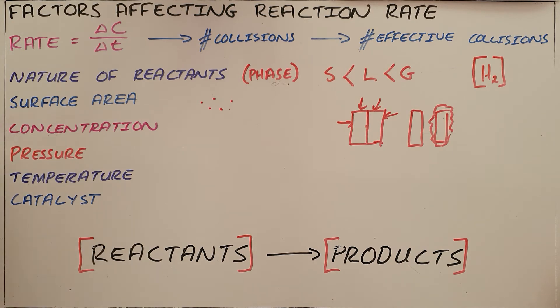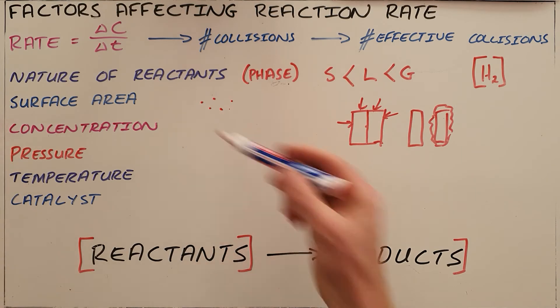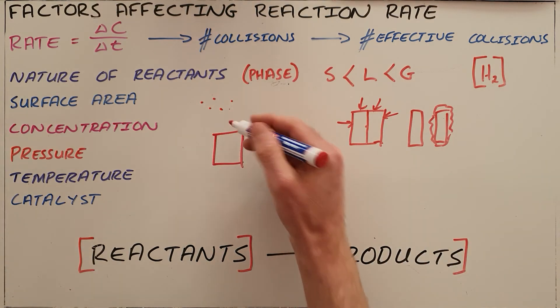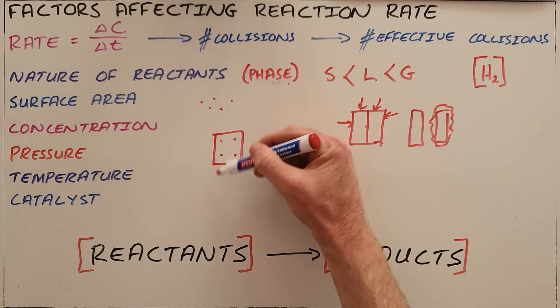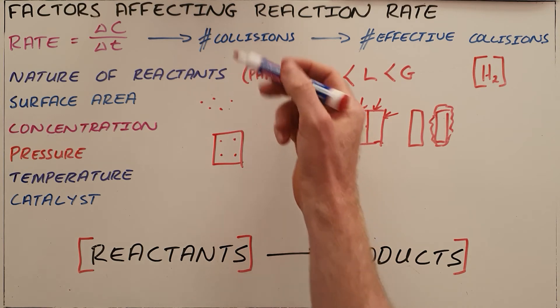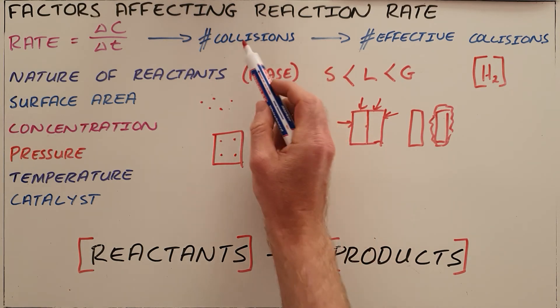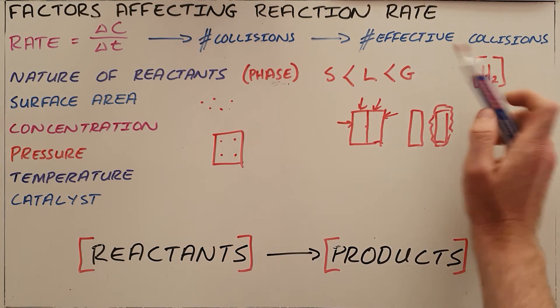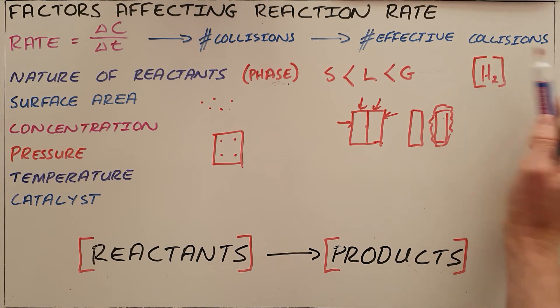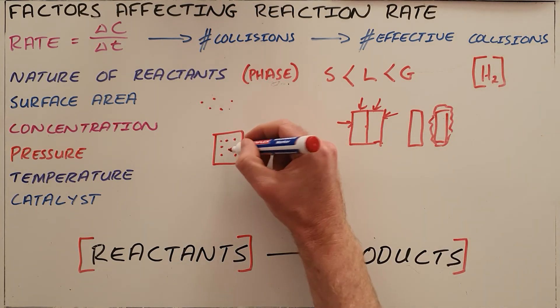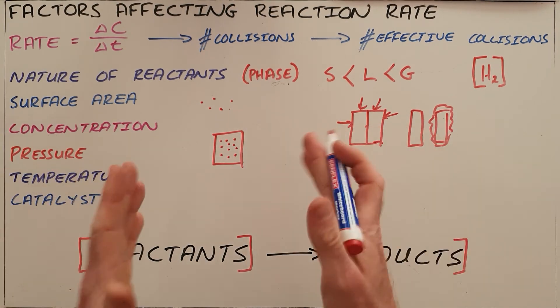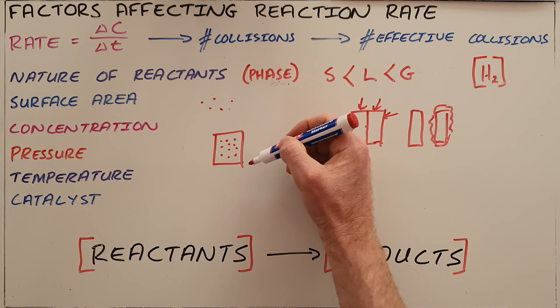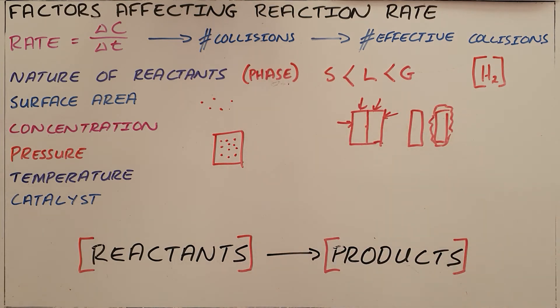Increasing the concentration and increasing the pressure of a substance are both very similar in that they are increasing the number of particles per unit area. If you only have four particles in a certain area and they are bouncing around, they will eventually collide with each other, but the number of collisions will be low and therefore the number of effective collisions will be even lower. Whereas if you increase the number of particles, either by increasing the concentration or by increasing the pressure, pushing them closer together, you will increase the number of collisions and therefore the number of effective collisions.